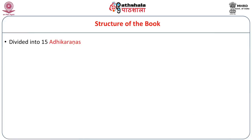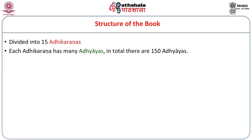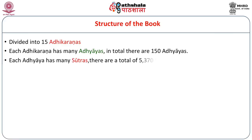This book is divided into 15 Adhikaranas. Each Adhikarana has many Adhyayas; in total there are 150 Adhyayas. Each Adhyaya has many Sutras; in total there are 5370 Sutras, but it is simply referred to as a 6000 Sutra book.